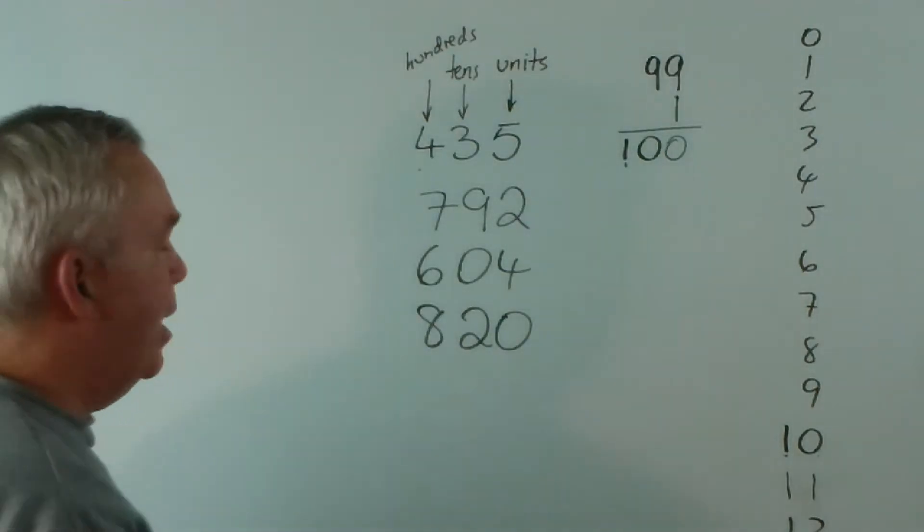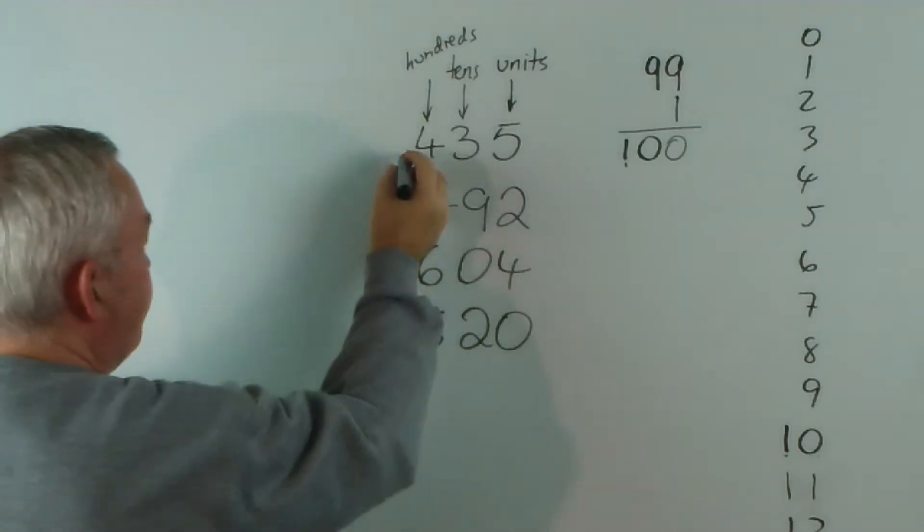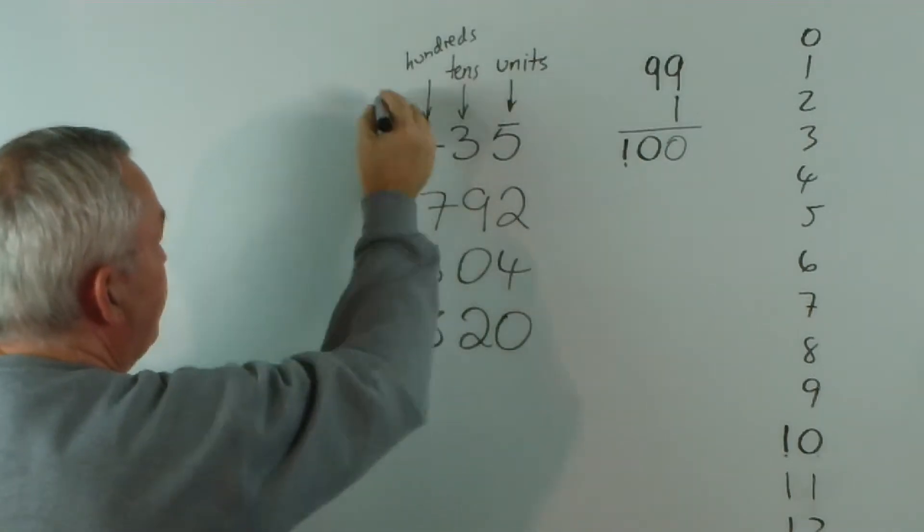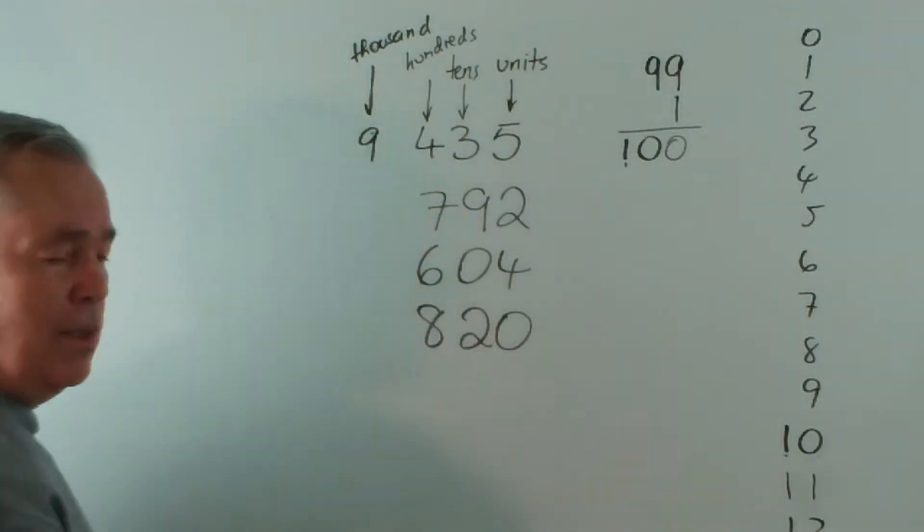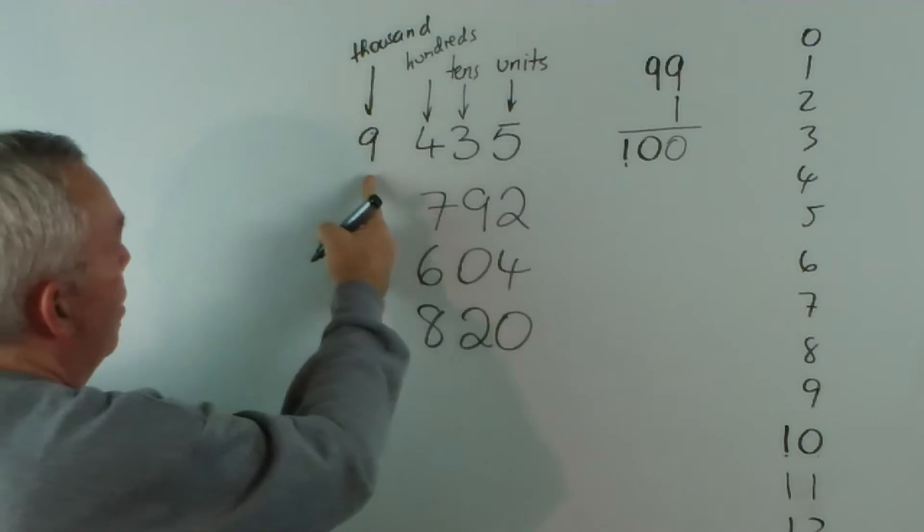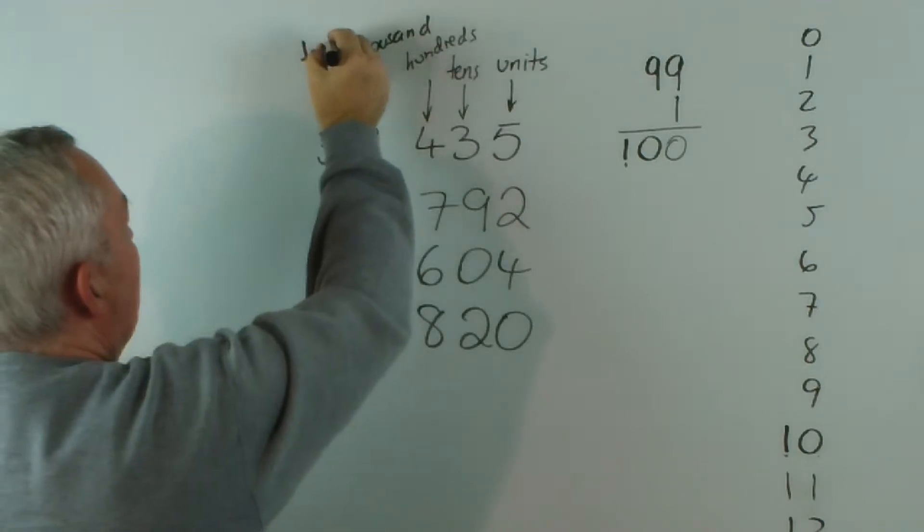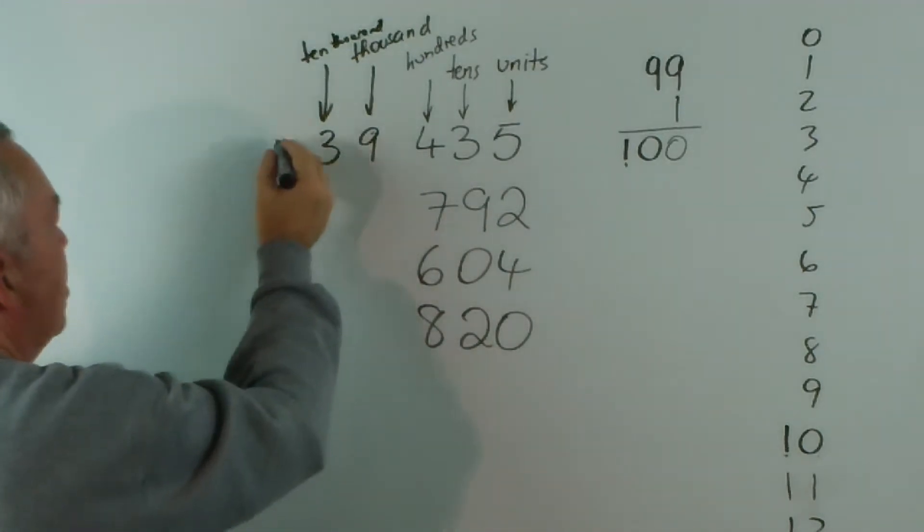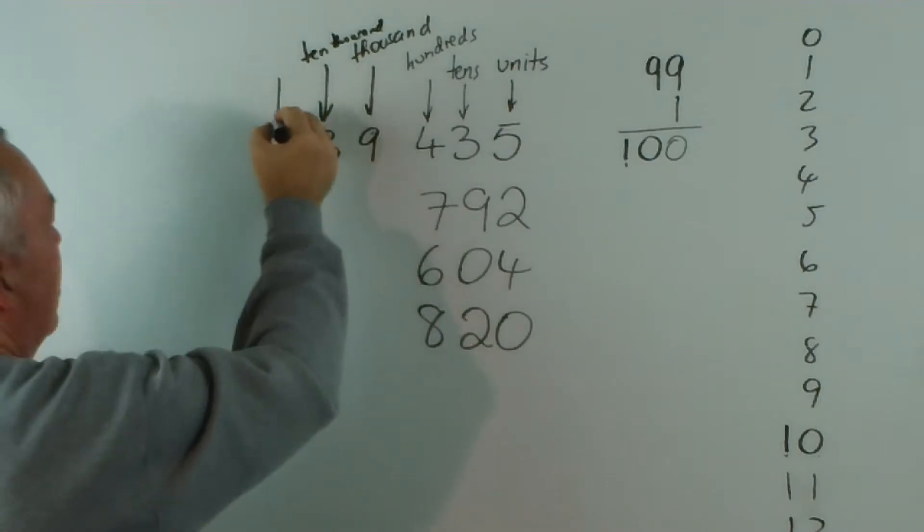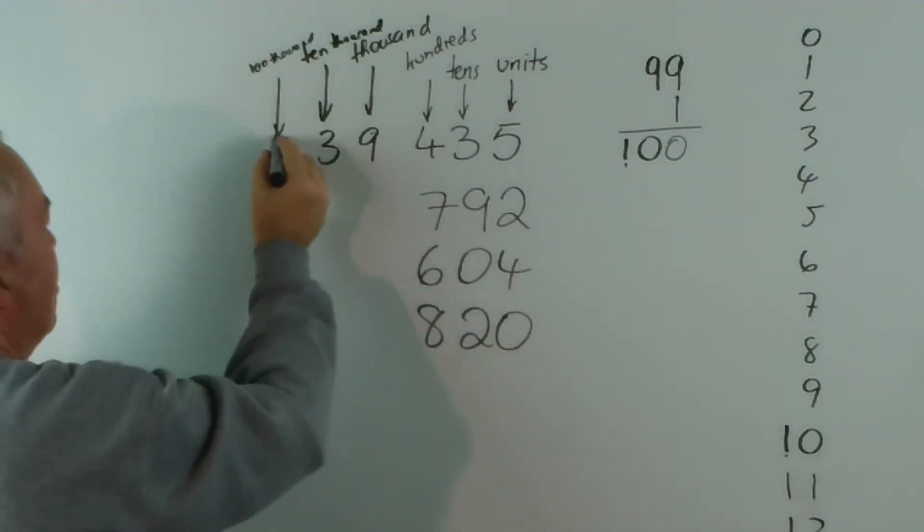We start to encounter difficulties when we go to extra columns. What are ten hundreds worth? Well, ten hundreds are worth a thousand. So if I had a number in this column, they're worth thousands. And if I had ten thousands, we, appropriately enough, call this the ten thousands column. There's no extra new word for it. And if we have ten of those, ten lots of ten, we have the one hundred thousands column.